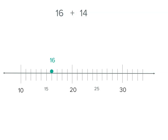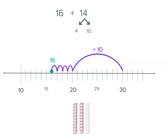Starting at sixteen — one past fifteen — I'm going to count to the next ten, which is twenty. To do that, I break my fourteen up and add four first to reach twenty. That's like counting to ten; we're counting to the next ten. We've used four of our fourteen and have ten left. We can add ten easily: twenty plus ten is thirty. So we counted to the next ten and then added ten to get thirty.